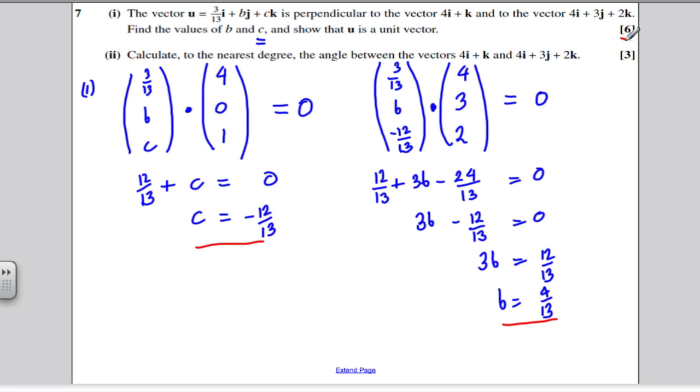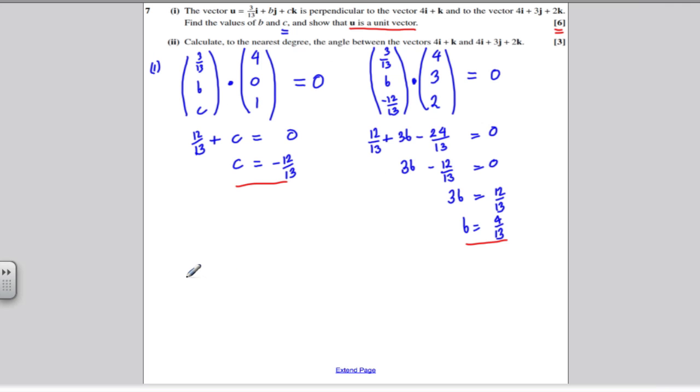Lastly, don't forget this, it's a 6 marker. Show that U is a unit vector. So let's actually write what U is here.